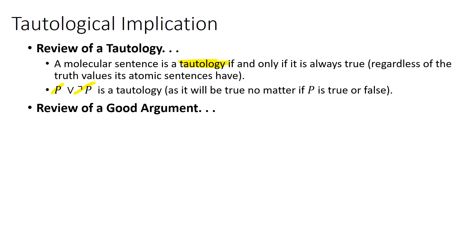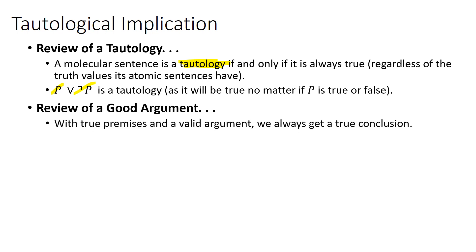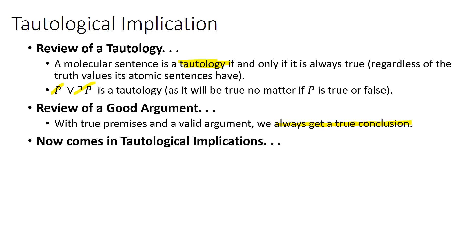Let's review what is a good argument. Remember, with true premises and a valid argument, we always get a true conclusion. With those conditions — true premises, valid argument — the conclusion is guaranteed to be true. And here is where a tautological implication comes into play. Maybe a little confusing at first, but in the next few slides I have a lot of examples, and those should help clarify things.